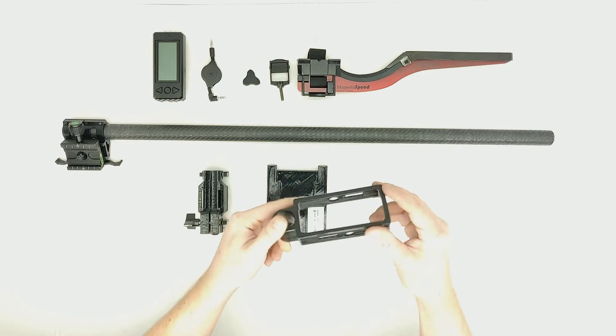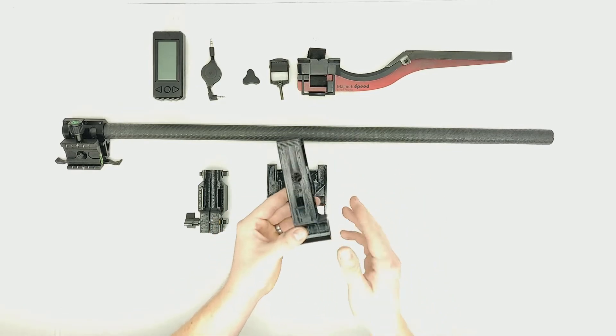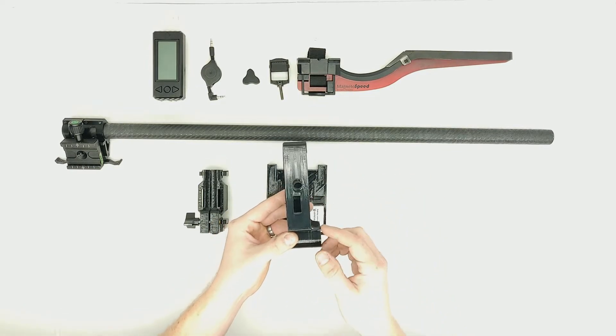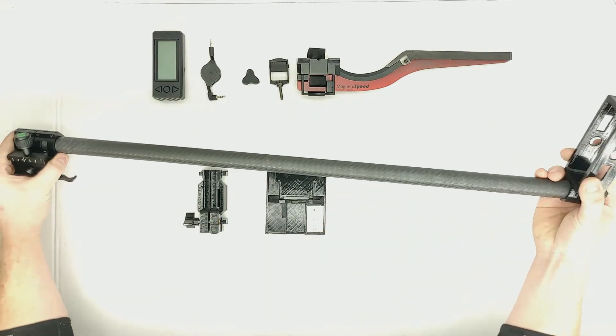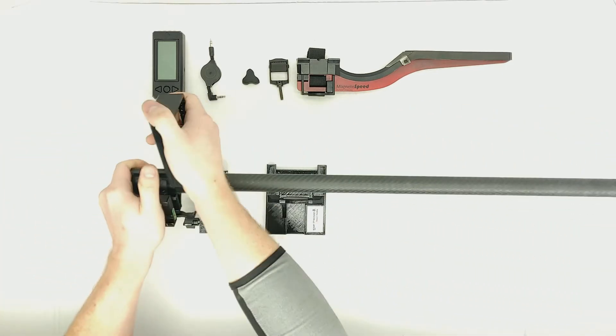To do this we will use the display holder. Note there are cutouts on either side for the SD card and headphone jack. The holder is also directional and will require the long side of the compression sleeve to face away from the shooter. Simply slip it over the tube and slide to the back.